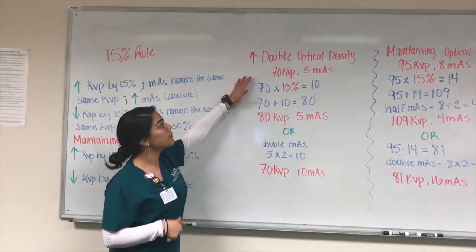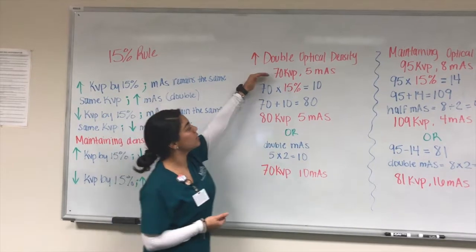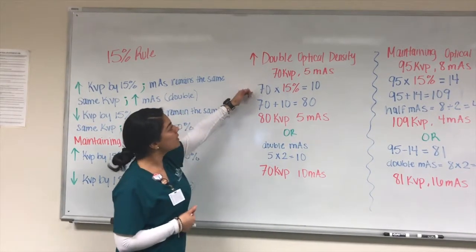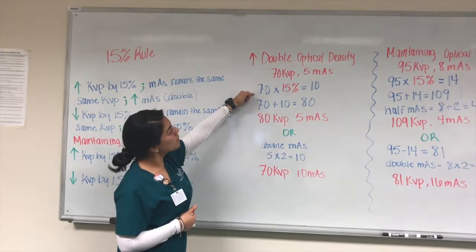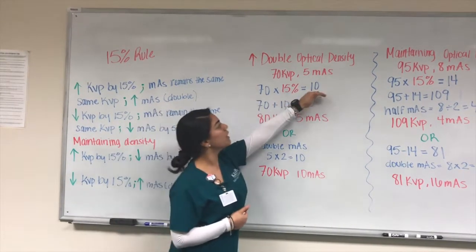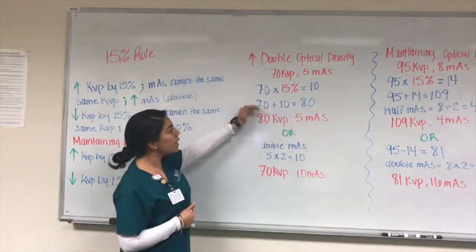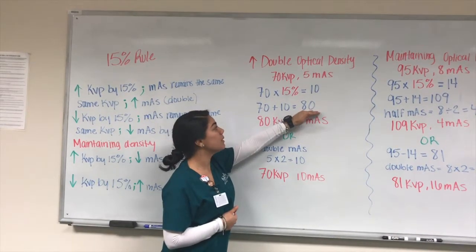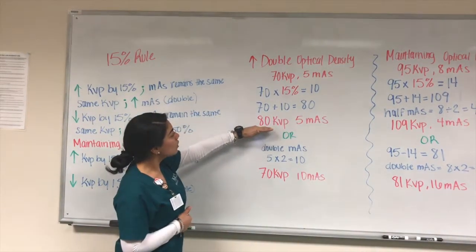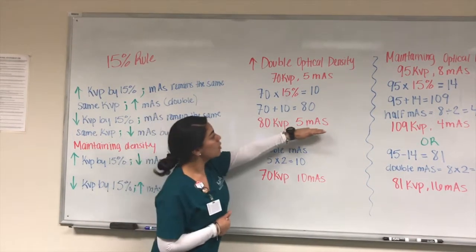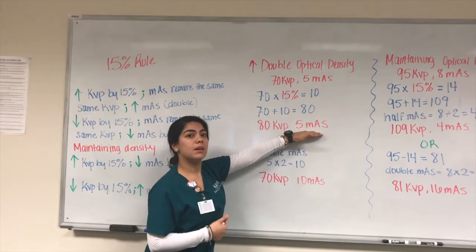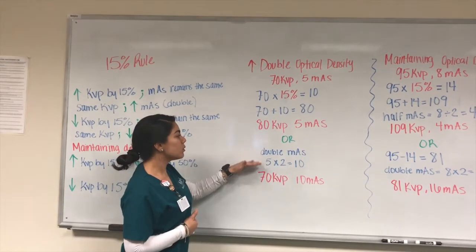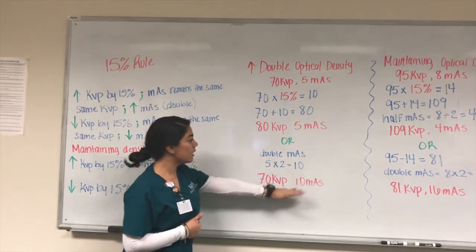For example, to double the optical density with factors of 70 kVp and 5 mAs: multiply 15% by 70 to get 10, then add it to 70 for a new kVp of 80. You would use 80 kVp while keeping the same 5 mAs, or you can double your mAs to 10 and keep the same 70 kVp.